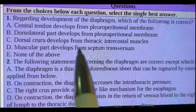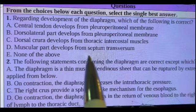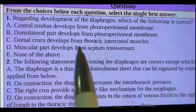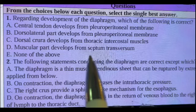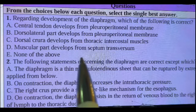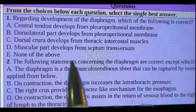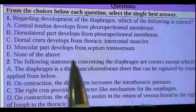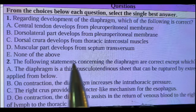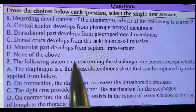To sum it up: the central tendon is from the septum transversum; the dorsolateral part is from the pleuroperitoneal membrane; the dorsal crura is from the esophageal mesentery; and the muscular part is from the intercostal thoracic muscles.